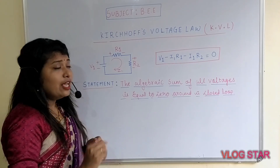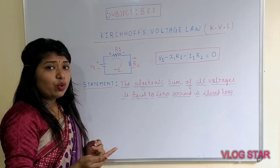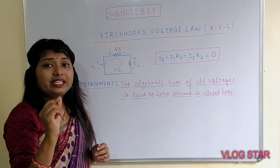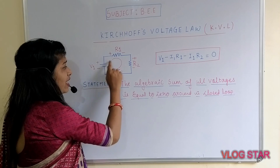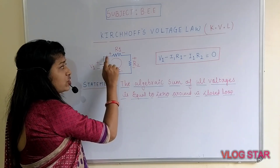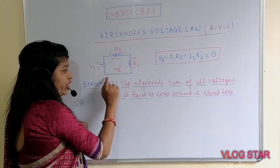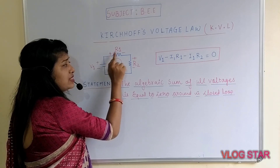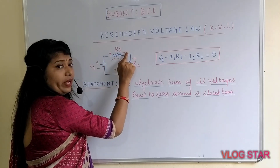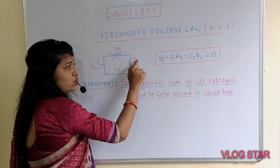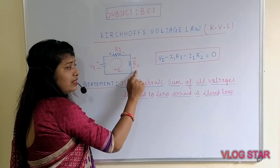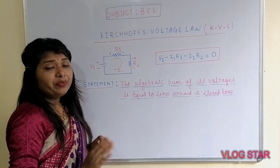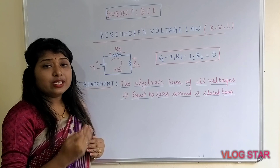Next, you have to assign the polarities to the resistors according to the direction of current. Since I have considered the clockwise direction, the first polarity assigned will be plus, next minus; similarly this would be plus, next minus, and so on.